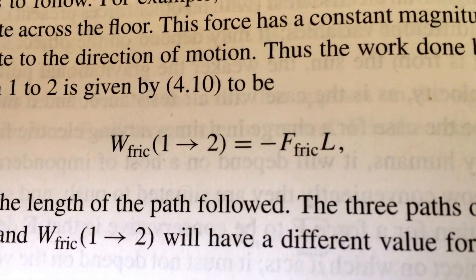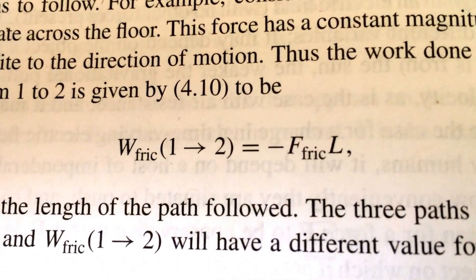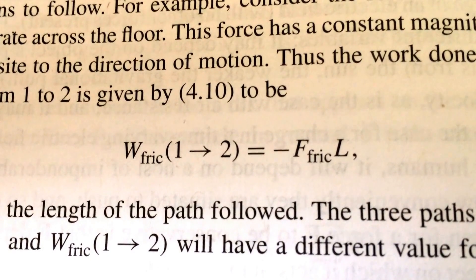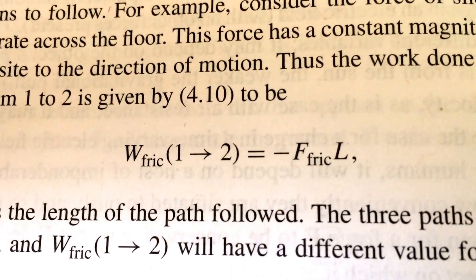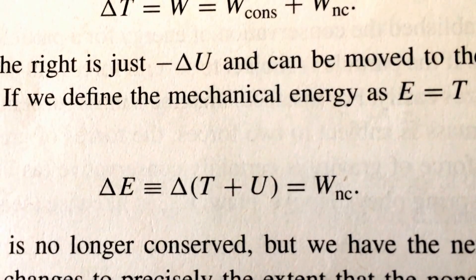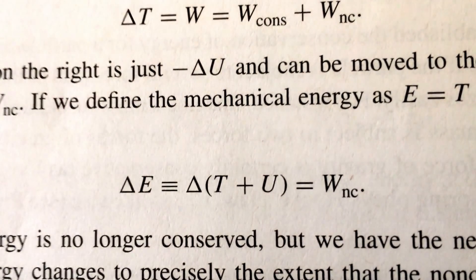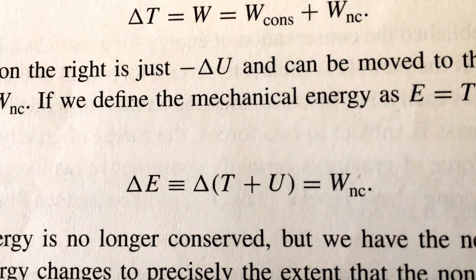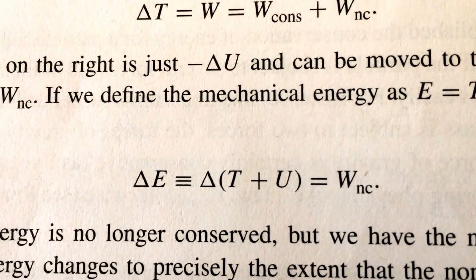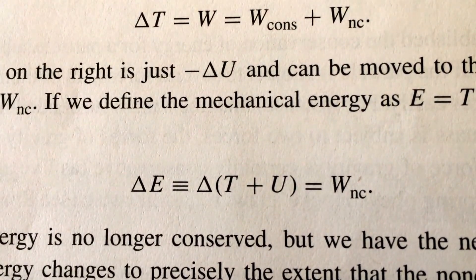If we do have non-conservative forces acting — for example, friction — we have a straightforward way of incorporating their effect on the total energy of the system. Non-conservative forces can still do work, and in this case they are constantly removing energy from the system. The conservative forces will not change the total energy, so the change in the total energy delta E — the change in the sum of kinetic and potential energies — equals the work done by the non-conservative forces. We can still formulate the problem in terms of the change in the energy of the system.